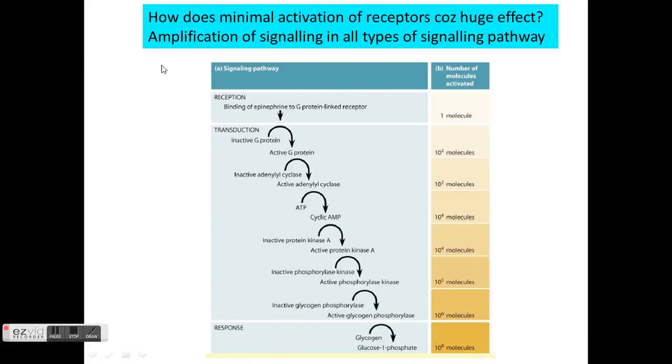The last part is an overview of all the signaling we've gone through. Along the signaling pathway, one common thing that happens is called amplification — the signal gets louder and stronger as it goes further down the pathway.